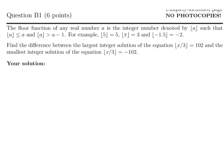The first thing I want to do is explain this bracket notation. Basically, it's the smallest integer less than the number inside. So ⌊5.2⌋ = 5, and ⌊4.7⌋ = 4. It gets a little confusing with negative numbers. For example, ⌊−1.7⌋ — the smallest integer less than that is negative 2.